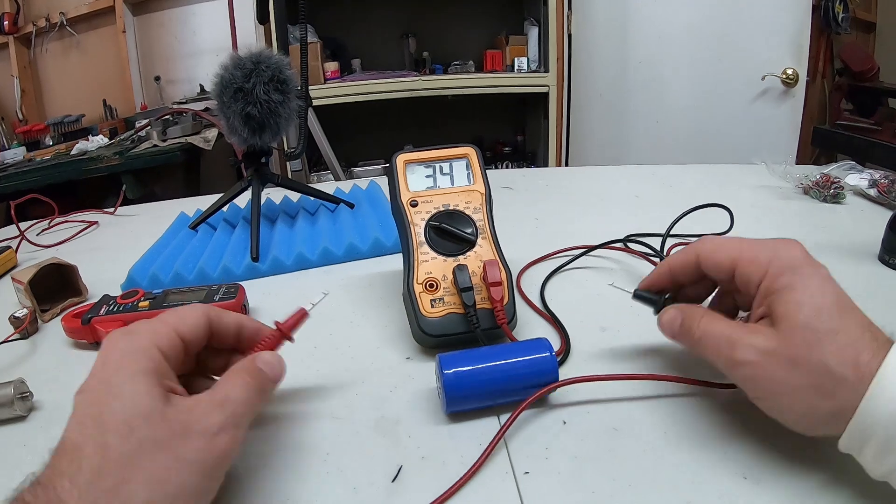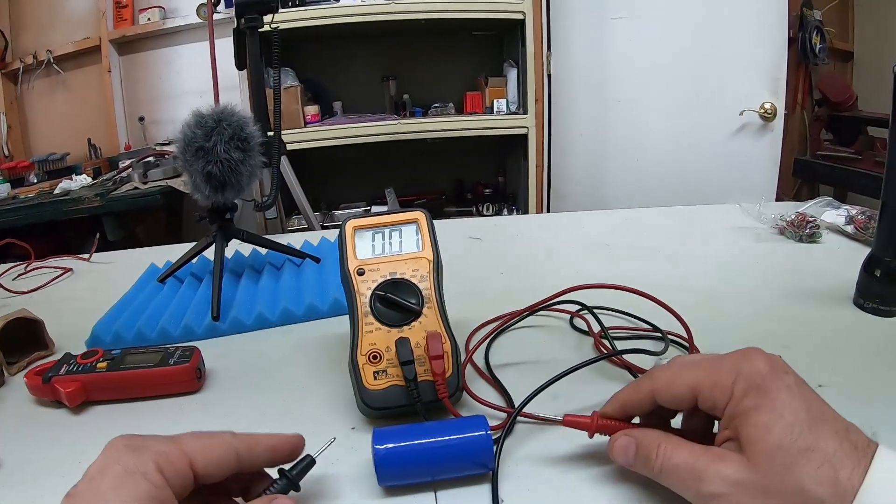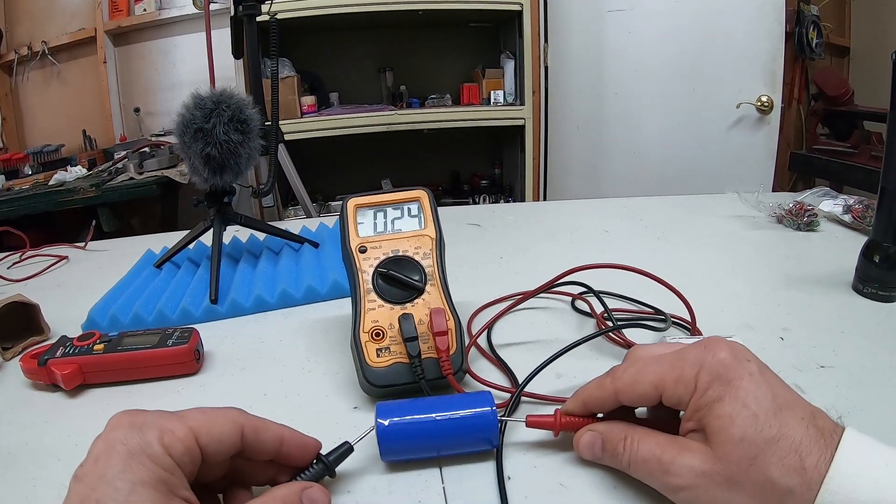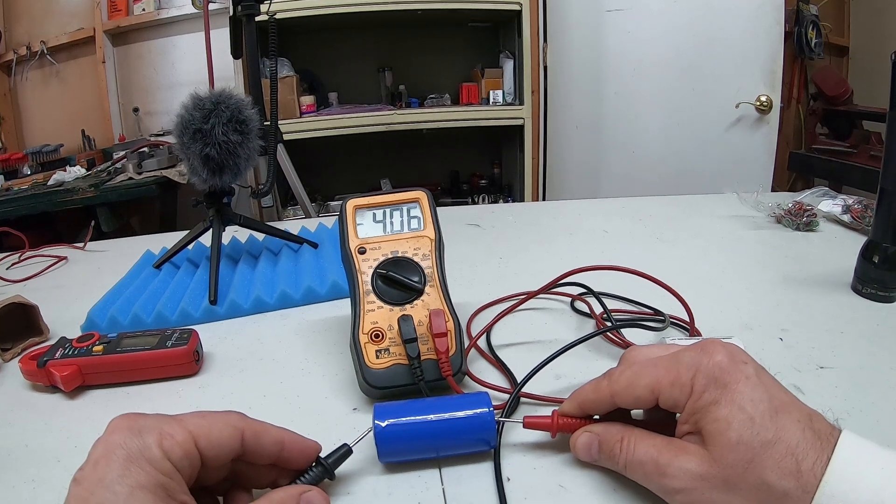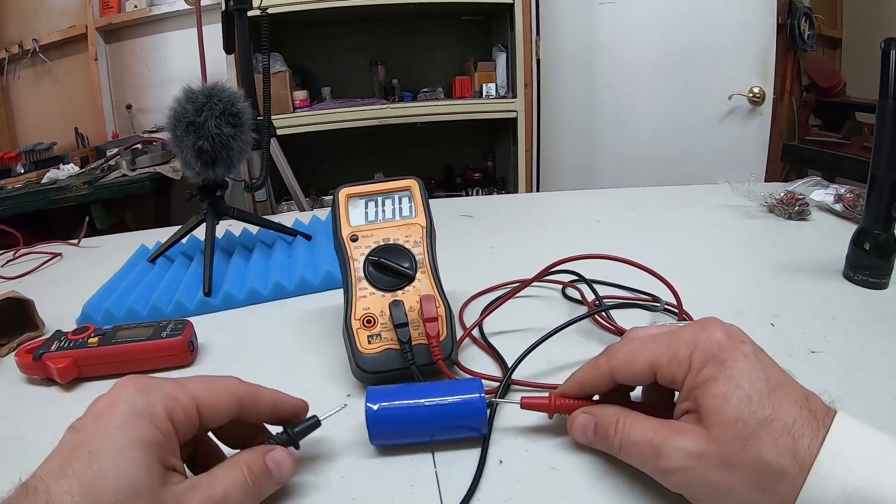If you happen to get the polarity wrong, no big deal. It just means that the meter will read negative volts. Look up here on the left.